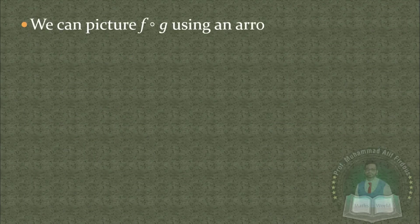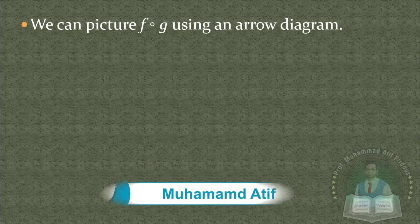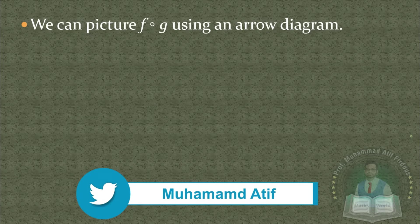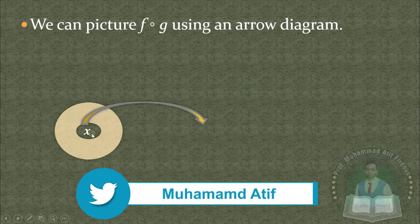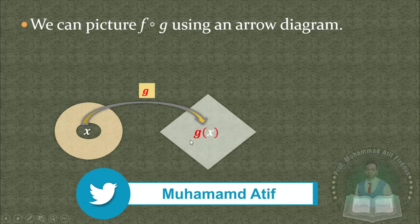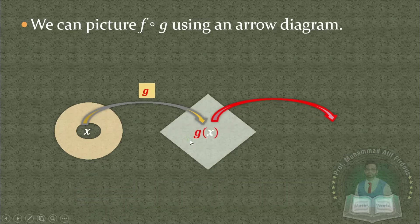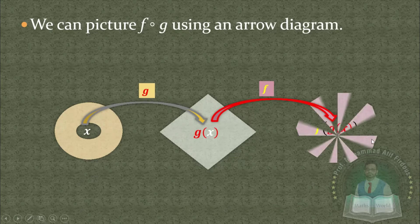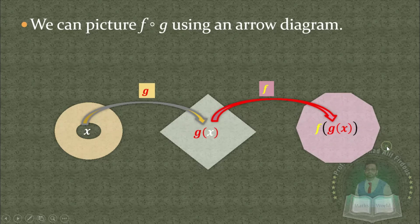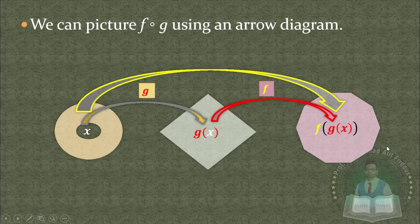We can picture f∘g using an arrow diagram. Suppose we have a variable x and we apply function g to get g(x), then we apply function f on g(x) to get f(g(x)). You can see this on your screen.